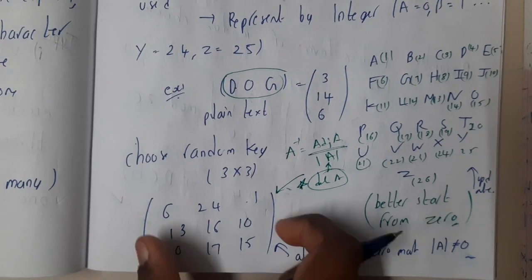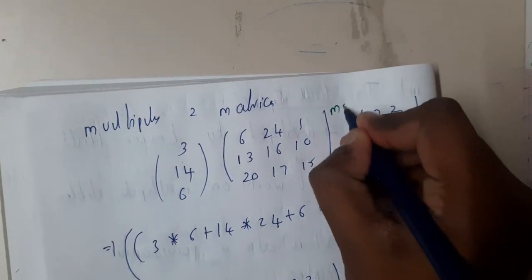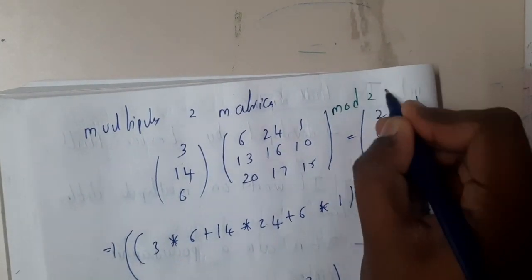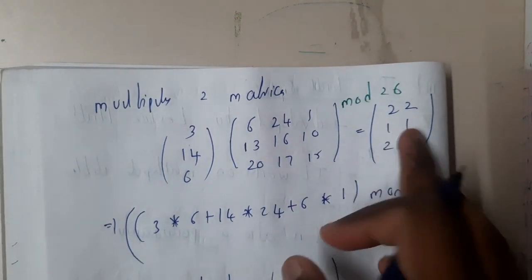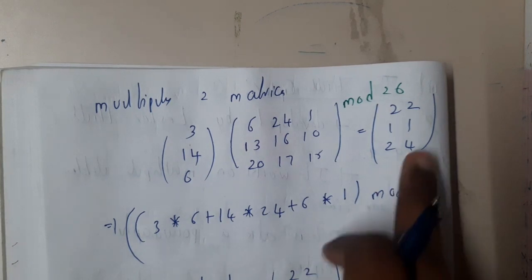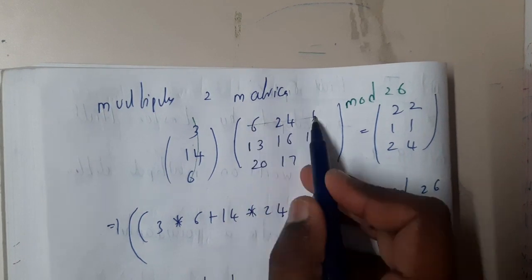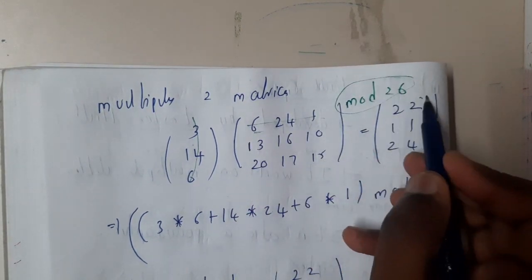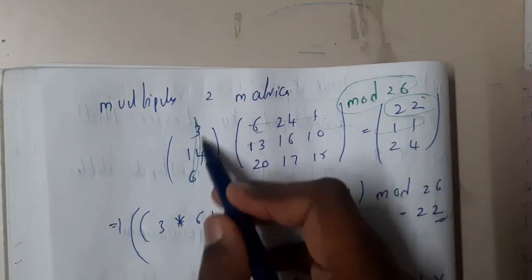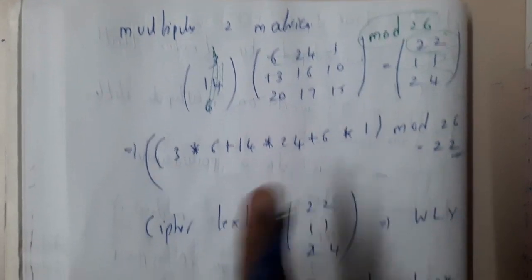Once you have selected this, you will be multiplying these two matrices. Along with that, you will be dividing it with mod 26 to get the value less than 26, because you want to represent it again in terms of ABCDs. You will be multiplying this with this and adding the results and dividing with mod 26 to get the remainder 22. Similarly for the second and third values.